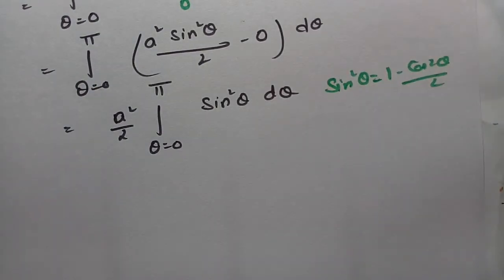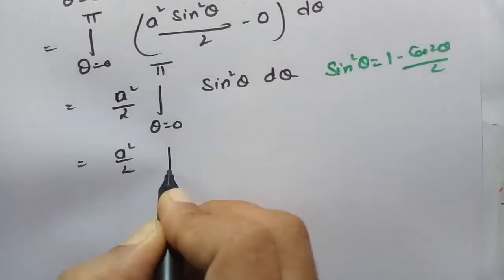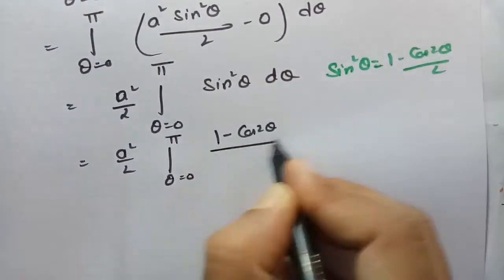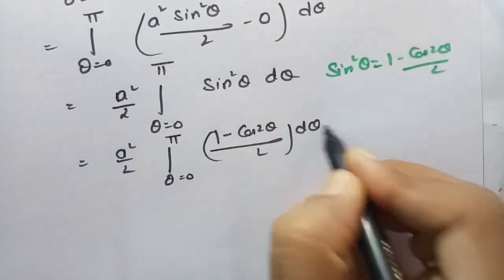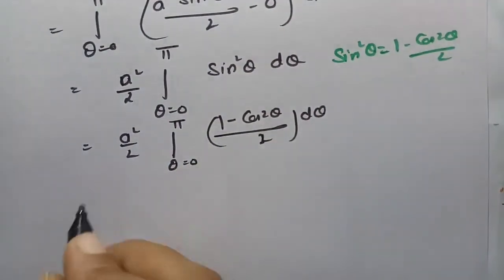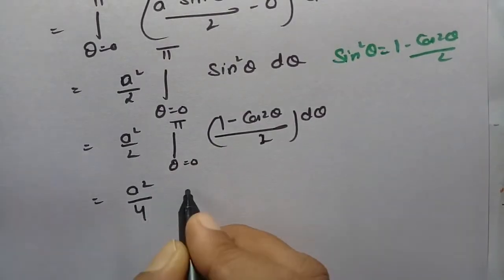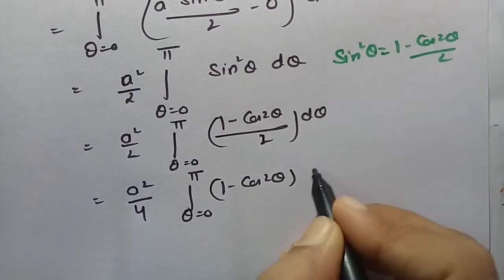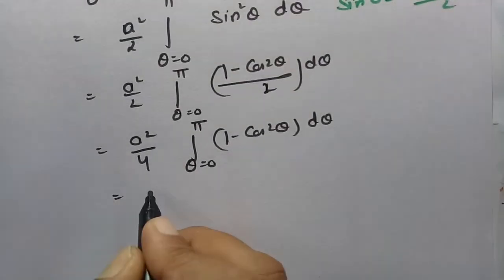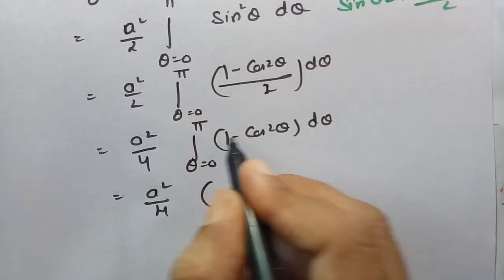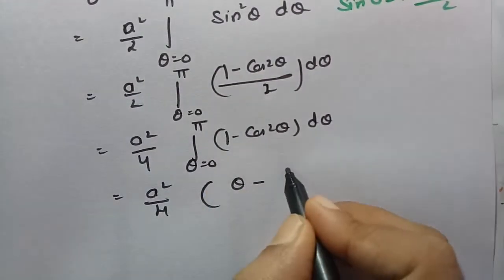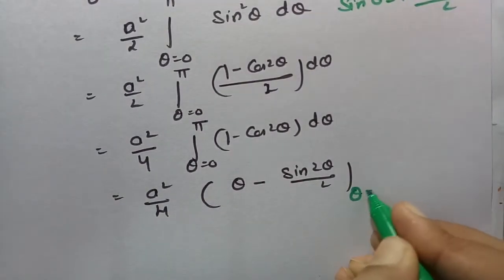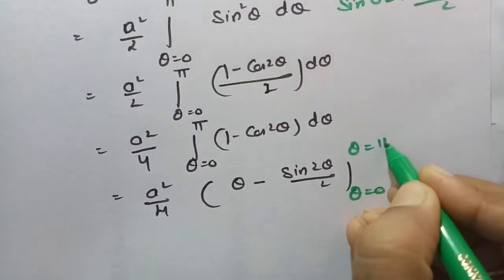So if I substitute the same thing here this will be a squared by 2, integral 0 to pi, this is 1 minus cos 2 theta by 2, into d theta. If I send this 2 to outside then this will be a squared by 4, theta is equal to 0 to pi, this is 1 minus cos 2 theta, into d theta. This will be a squared by 4 and for 1 d theta is nothing but theta, and cos 2 theta integrates to sin 2 theta by 2, between the limits theta equal to 0 and theta equal to pi.